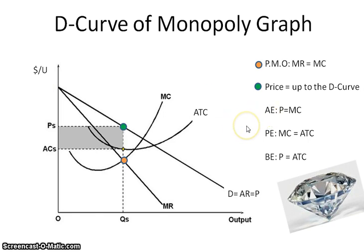Allocative efficiency, remember, is producing that right mix of goods. The formula for that one is price equals marginal cost. As you can see on the graph, allocative efficiency is over here. That's very sad because what that means is that a monopoly is never allocatively efficient. They're always producing at an output where price is always above marginal cost.